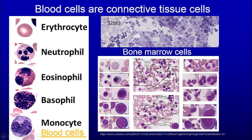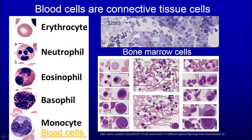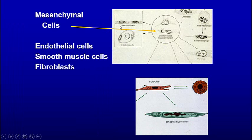Here we see the different blood cells: the monocyte, basophil, eosinophil, neutrophil — and the bone marrow is the source of these. Cells are produced in the bone marrow, migrate out into the blood vessels, and then they go through. If you go to this YouTube site, you'll be able to see explanation of the different cells — red blood cells and white blood cell formation.